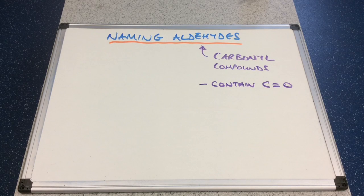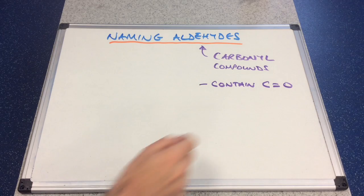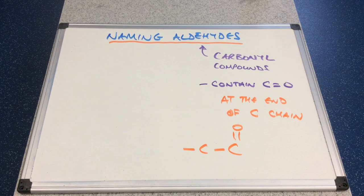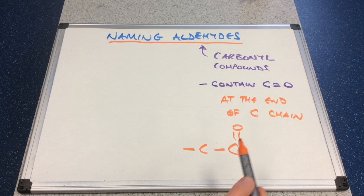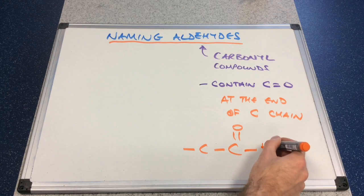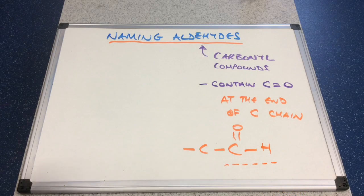In this video I'm going to look at how to name aldehydes. Aldehydes belong to a class of compounds called carbonyl compounds, because they contain this C double bond O. In aldehydes, the carbonyl group is at the end of the carbon chain. So if this is the last or first carbon, there's the C double bond O, and what else must be attached to this carbon? It must be a hydrogen. So aldehydes have this functional group here.